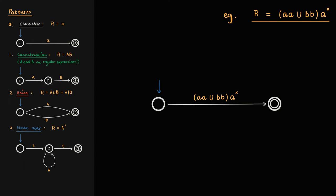R is a concatenation of two expressions, aa union bb on the one side, and a* on the other, so we can replace the R transition in the NFA with the concatenation pattern.